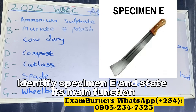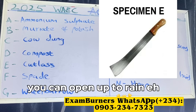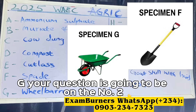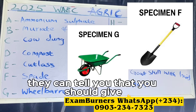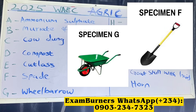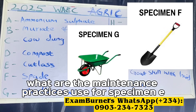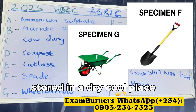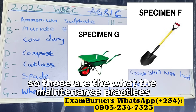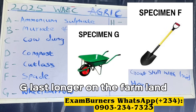Describe specimen E and state its main function. You can get your agric textbook, open it to farm equipment and farm tools, and get your answers. For specimens E, F, G, questions will likely be under number two and will cover: give a description of specimen E, F, or G; what are the maintenance practices for specimen E, F, G? Maintenance practices include: store in a dry cool place, wash after use, and lubricate metallic parts. Those are the maintenance practices that ensure specimens E, F, G last longer on the farmland.